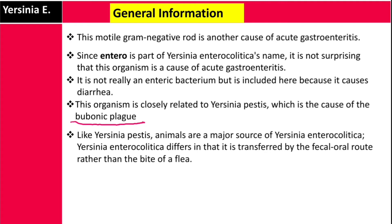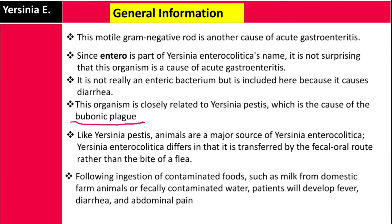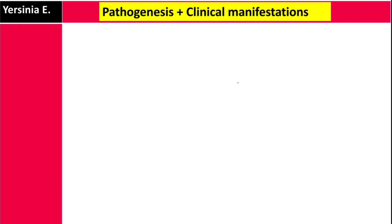Like Yersinia pestis, animals are a major source of Yersinia enterocolitica. However, Yersinia enterocolitica differs in that it is transferred by the fecal-oral route, rather than by a flea bite as in bubonic plague. Following ingestion of contaminated foods — such as milk from domestic farm animals — or contaminated water, patients will develop fever, diarrhea, and abdominal pain.